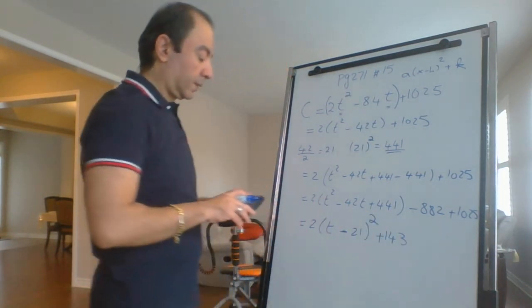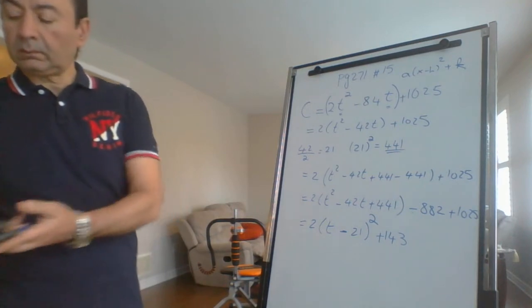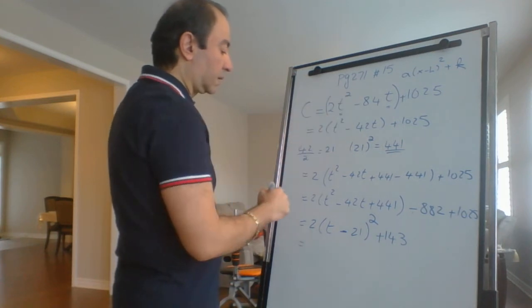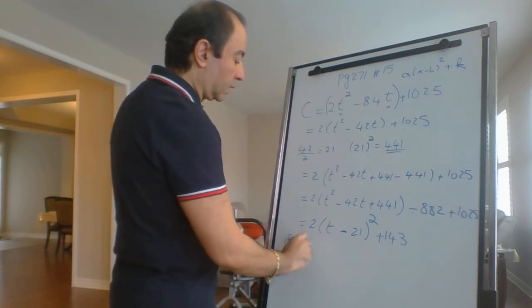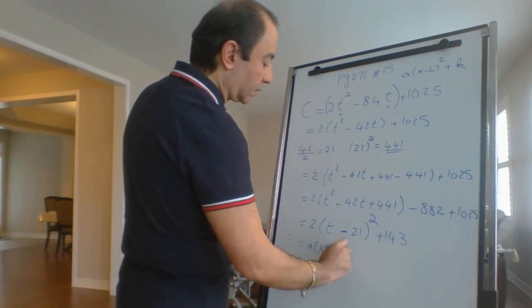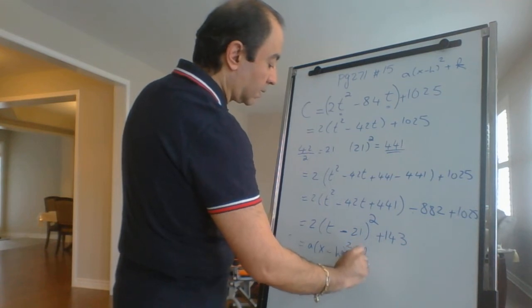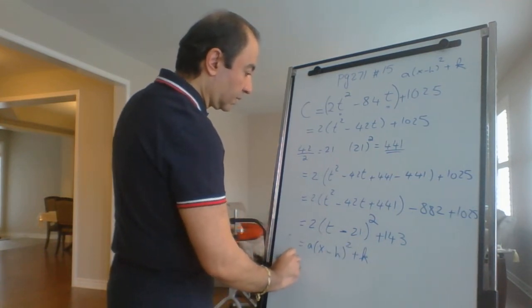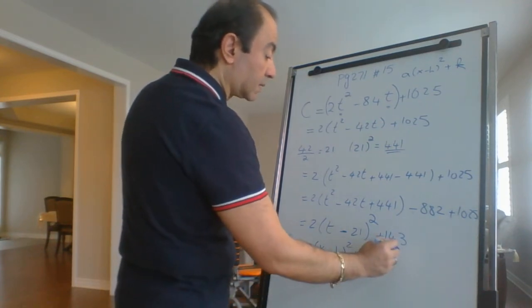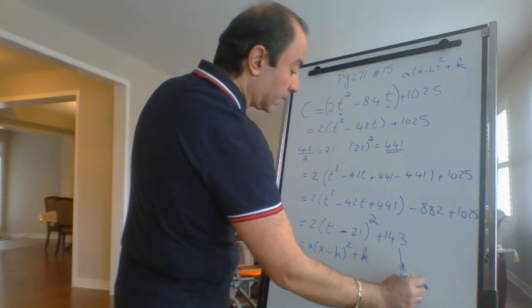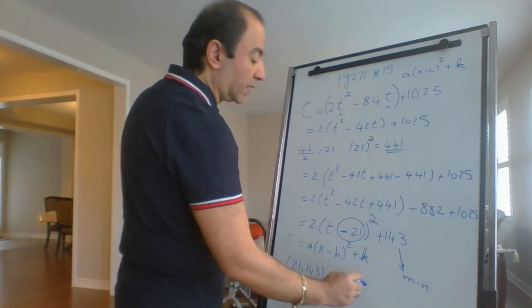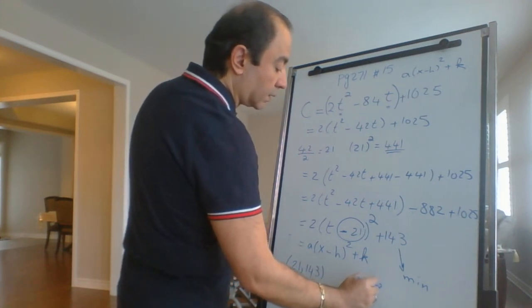Now we have turned the equation between C and T to a(x - h)² + k form. What is h and k? What's the vertex? It is 21 and 143. So what is the minimum cost? This is the minimum cost, which is $143, and that happens after 21 hours of operating.